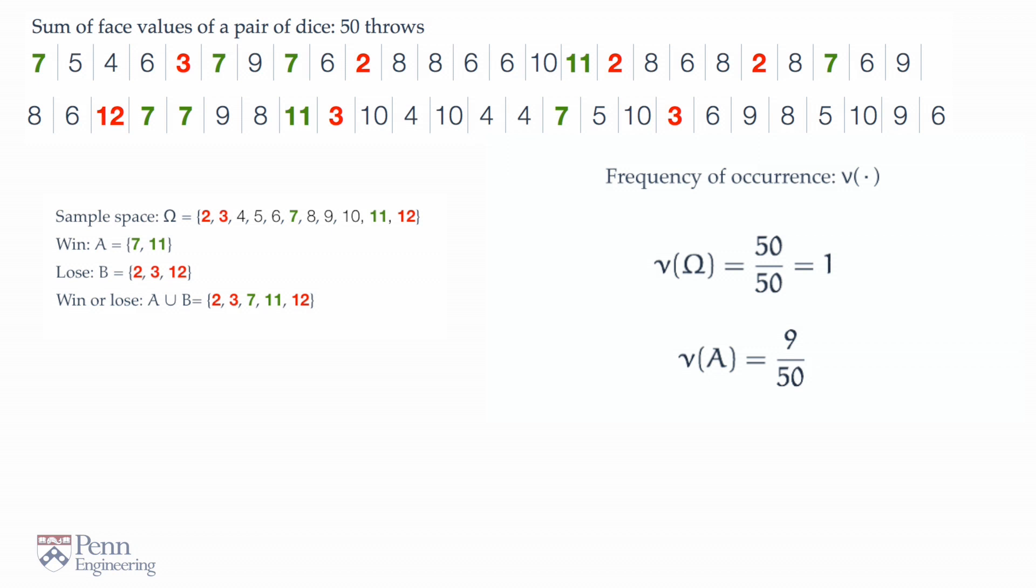Similarly, 7 protagonists out of the 50 threw a 2 or a 3 or a 12. And therefore, we assign to the event B that one loses on the first throw and craps the tentative chance 7 over 50. And what about the chance of terminating on the first throw?